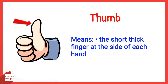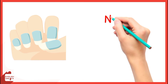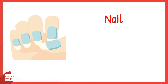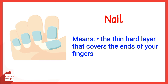Thumb means the short, thick finger at the side of each hand. Nail means the thin hard layer that covers the ends of your fingers.